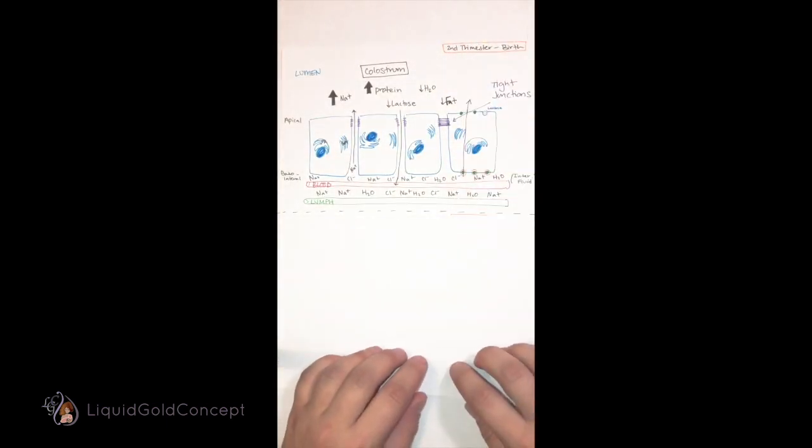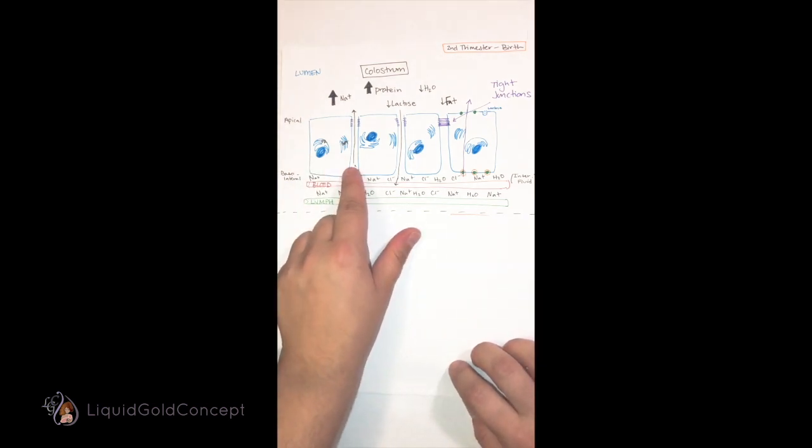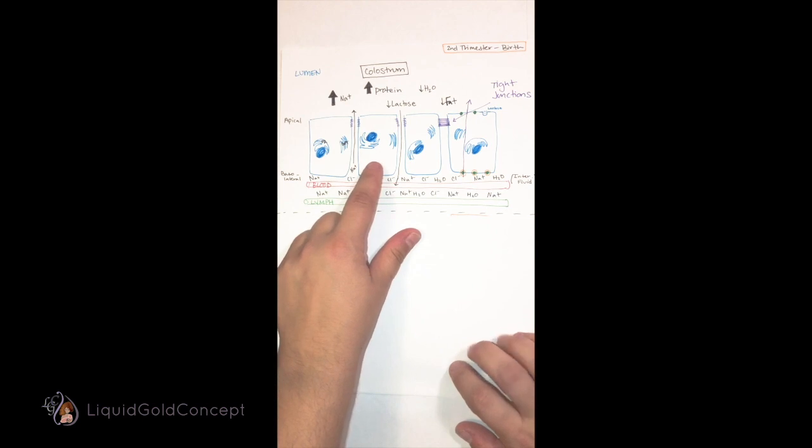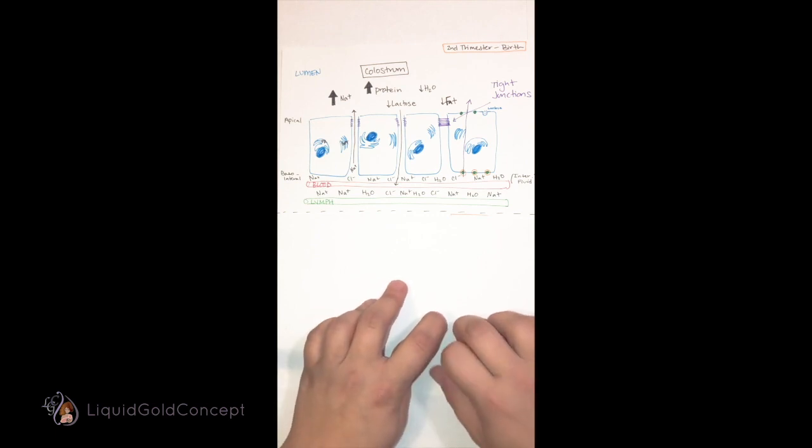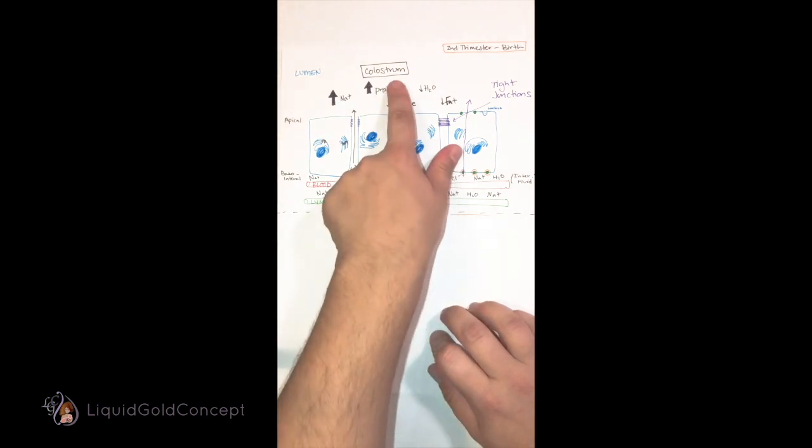During pregnancy, the mammary epithelial cells are somewhat disorganized without a strict unidirectional flow. The machinery is all there; they can produce milk, but they're not very efficient at doing so. There's no baby, so there's no need for copious milk production. Colostrum, remember,